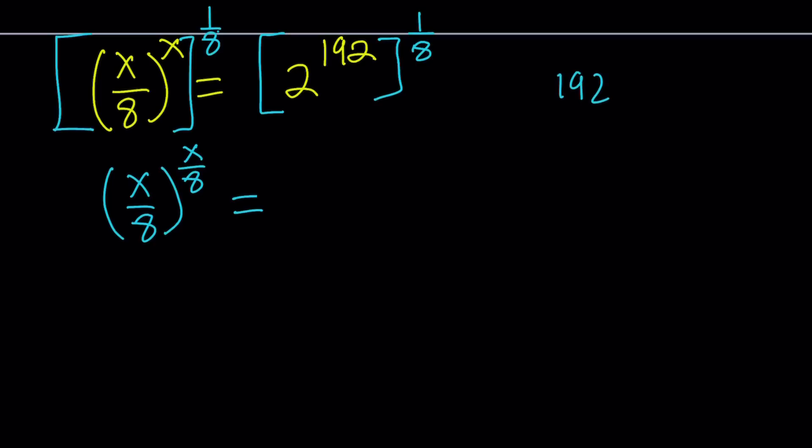So what is 192? 192 is 2 times 96, and that is 4 times 48, and that is 8 times 24. You see how I'm doing it?